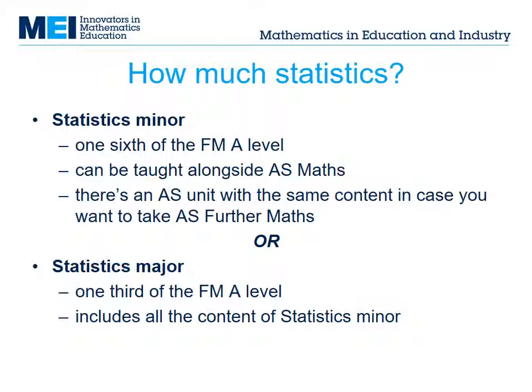You don't have to take any statistics in A-level Further Maths, but if you do want to, you can choose statistics as a minor option — one-sixth of the A-level — or as a major option, one-third of the A-level. In terms of size, that's like choosing to stick with S1 in A-level Maths, or to add on S2 and possibly S3 as well.